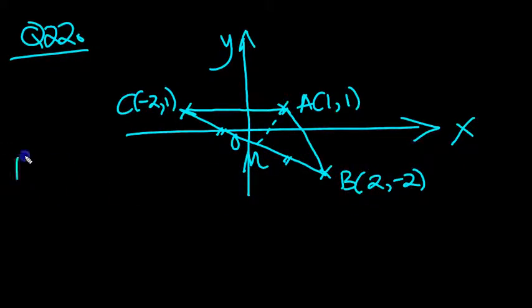So here, M, coordinates of M. So it's the midpoint of BC, so let's add the X values. -2 and 2, we get 0. 0 divided by 2 is 0. And then, so there's our point here.